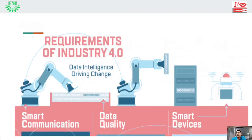The second important requirement is data quality. Data is the cornerstone of Industry 4.0, and factory automation is dependent on the collection and communication of data. Data intelligence and communication are only as good as the quality of data — if data quality is not good, the whole system will fail. Previously the aim had been to collect as much data as possible, but in Industry 4.0, the quality of data is more important than the quantity.